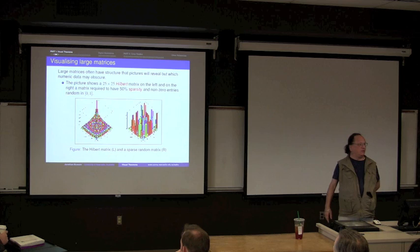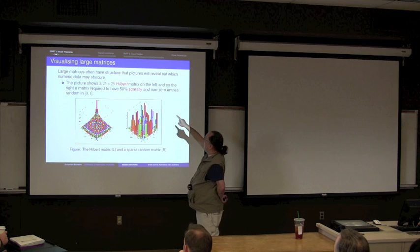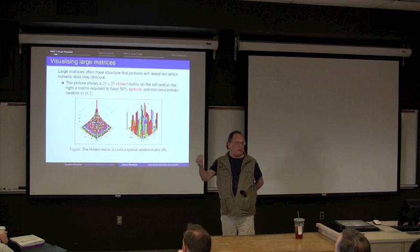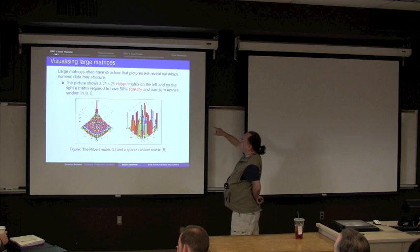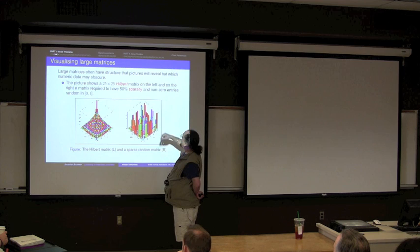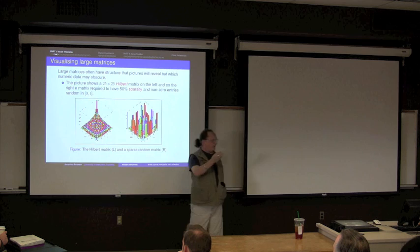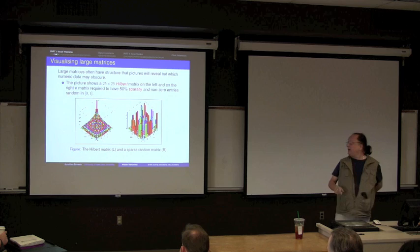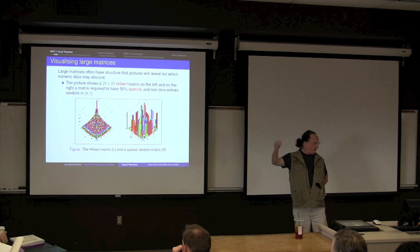Who's drawn pictures of matrices? The left-hand picture shows a 25 by 25 Clement matrix. I'll remind you what that is on the next page. And the picture on the right shows the matrix required to have non-zero entries random in 0-1 with a 50% sparsity. In other words, 50% of the entries have to be non-zero. And there's no doubt looking at it, which is which. You don't have to parse numbers. You can see the structure.